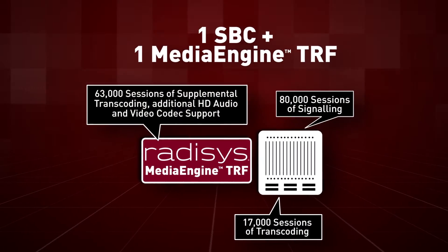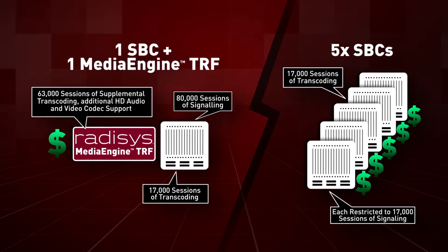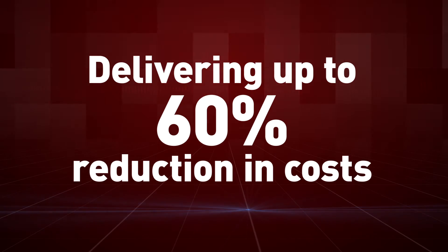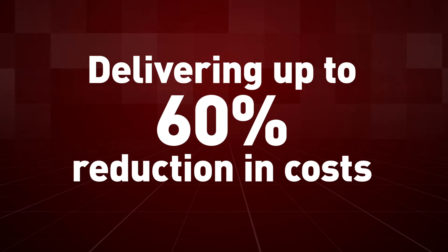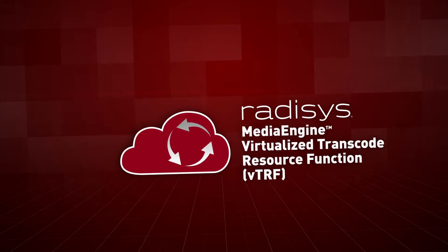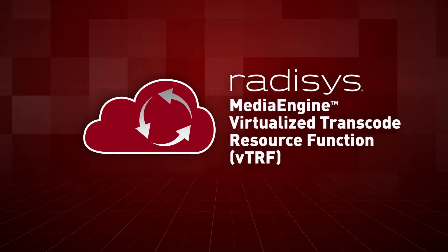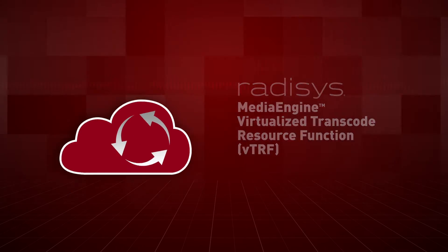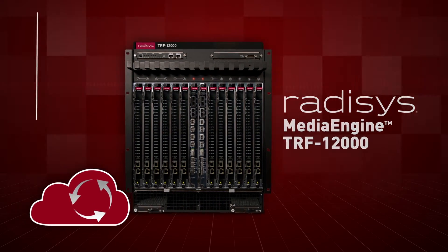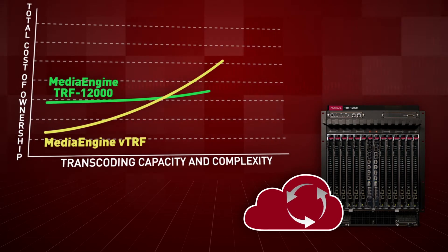Enhancing existing SBCs with Media Engine TRF is more economical than adding more SBC boxes, delivering up to 60% reduction in capital and operating costs. Transcoding can be deployed in cloud and NFV architectures with the RAID Assist Virtualize TRF. Alternatively, the RAID Assist Media Engine TRF 12000 is the optimum solution for high scalability or complex transcoding requirements.